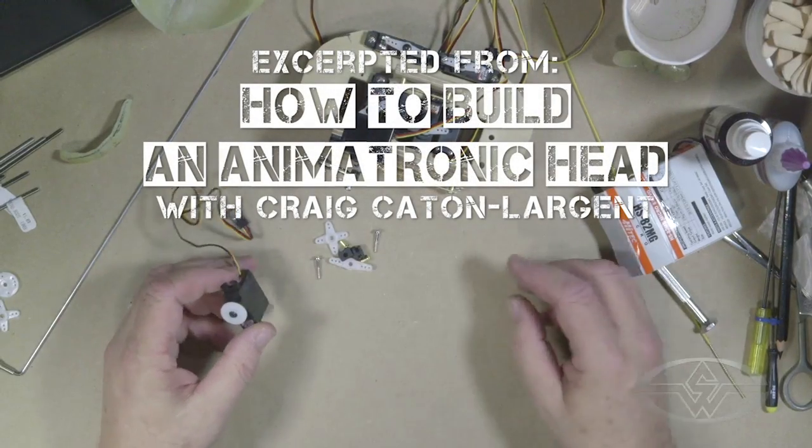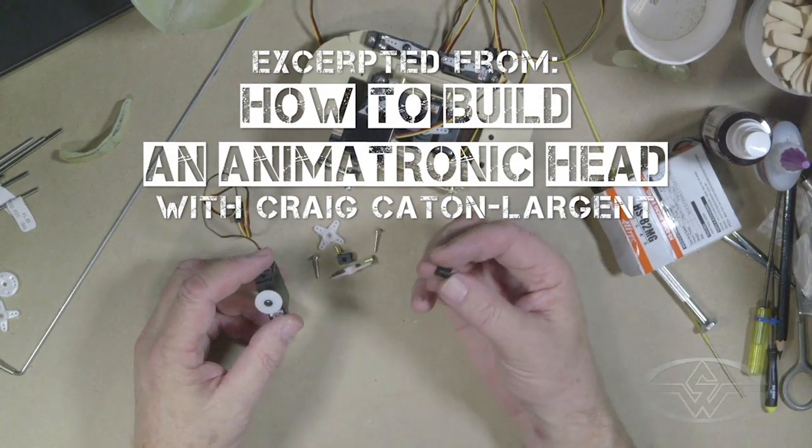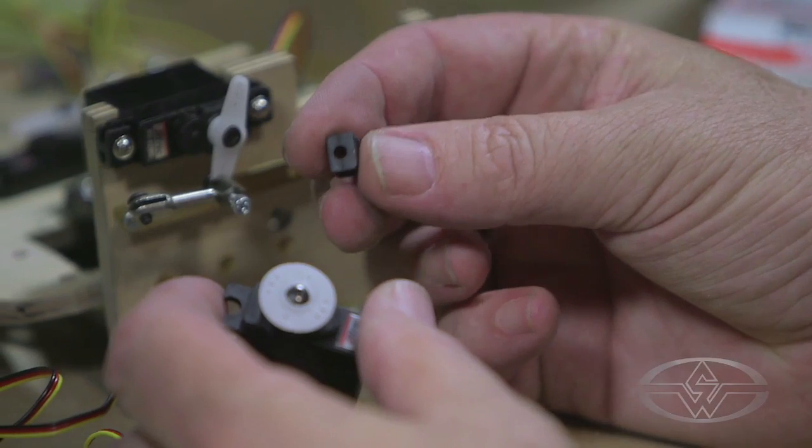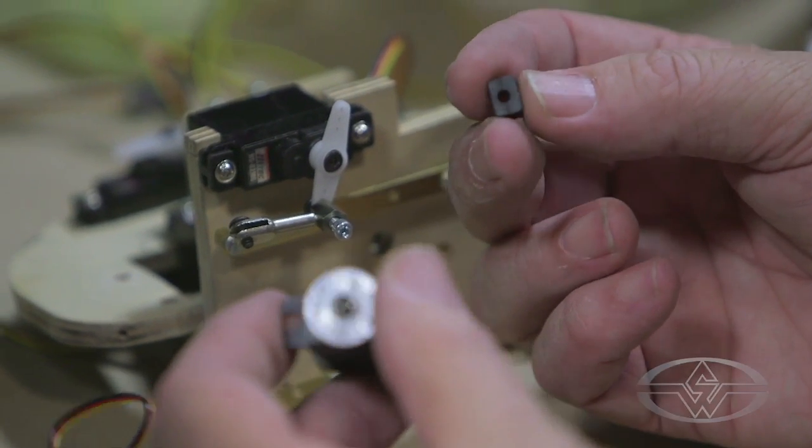Let's take a look at what came with this servo. First of all, it comes with these little rubber things.